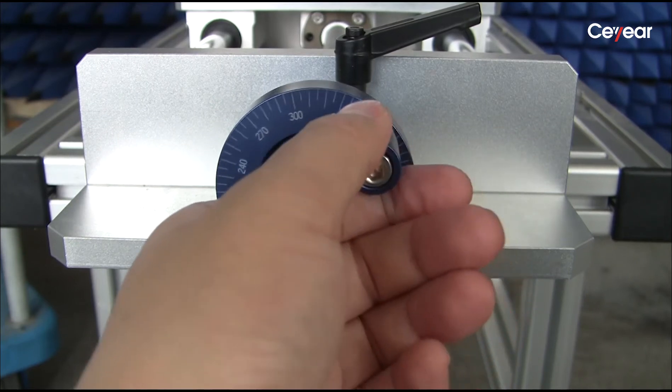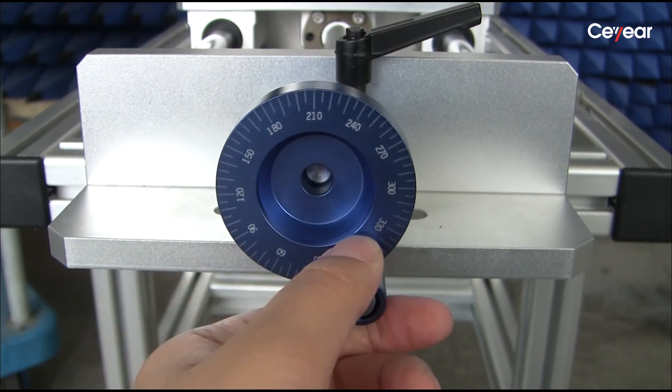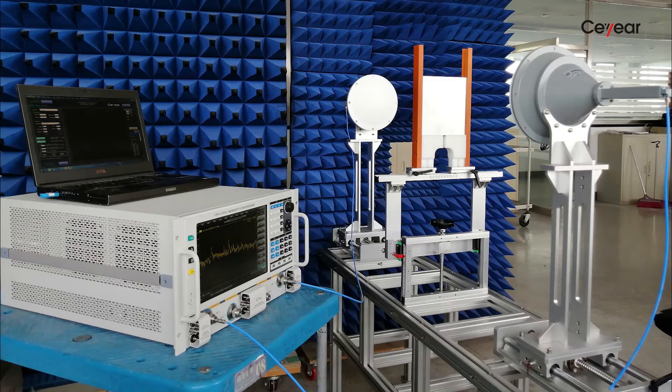Also, you can use the knob to adjust the distance between the antenna and the material. We have to align the centers of both antennas and the sheet.